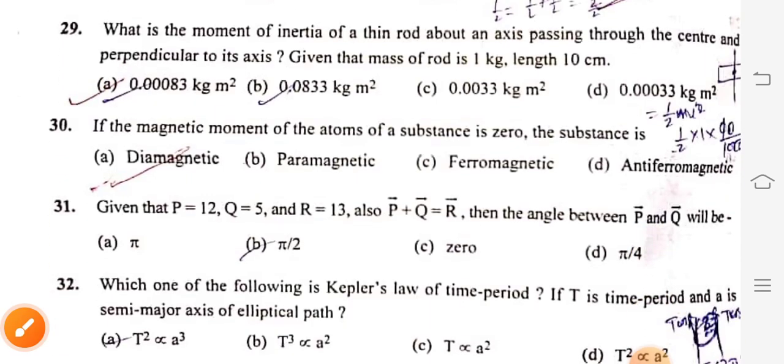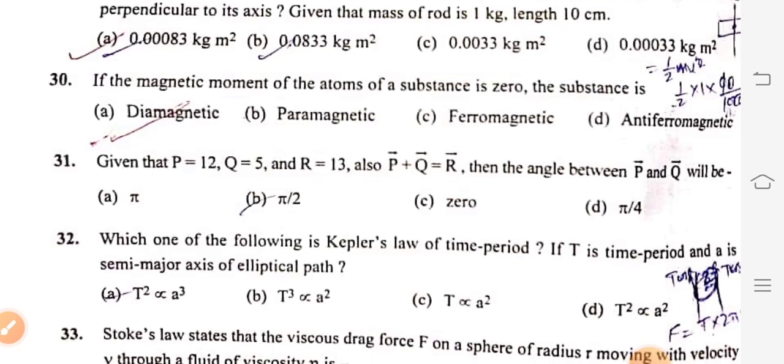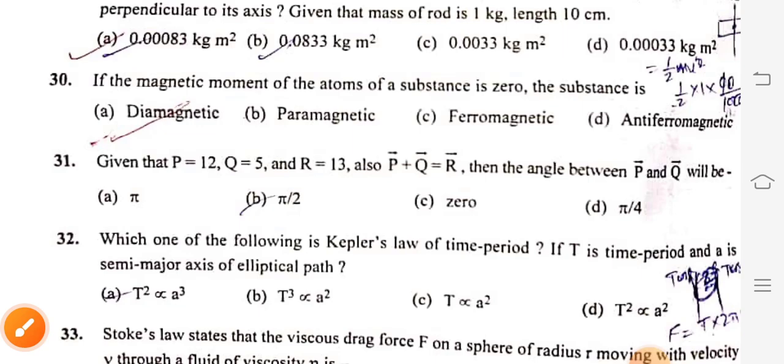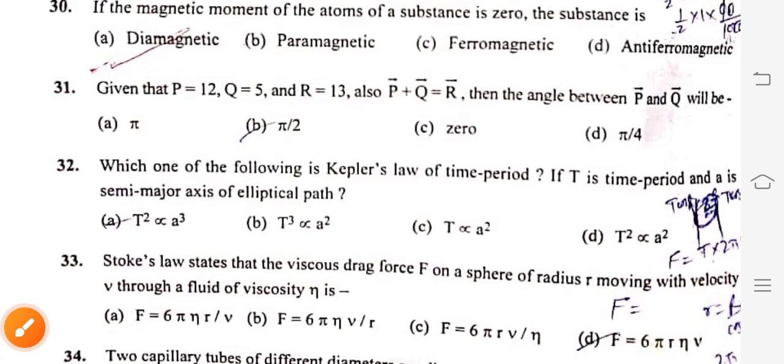Question 30: If the magnetic moment of the atoms of a substance is zero, the substance is diamagnetic, option A. Question 31: Given that P equals 12, Q equals 5, and R equals 13, also P vector plus Q vector equals R vector. Then the angle between P vector and Q vector will be pi by 2. This is a right angle triangle, so you can find it from the vector law of addition.